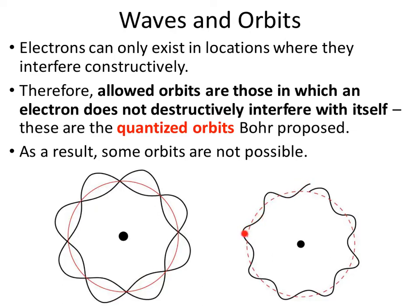If you look at this one over here, you can see that this wavelength is a little bit different. This wavelength and diameter actually doesn't allow it to loop over — it will actually start destructively interfering with itself. As a result, this type of orbit is not allowed. The only types of orbits that are allowed are ones that do not allow the electron to destructively interfere with itself, and this is called a quantized orbit.